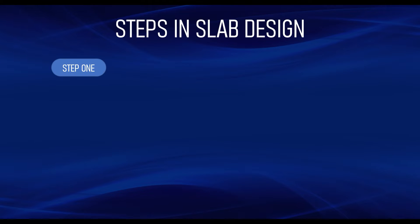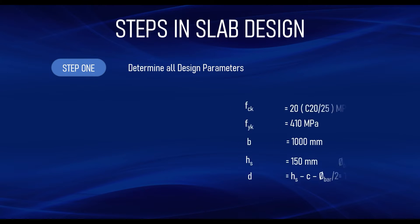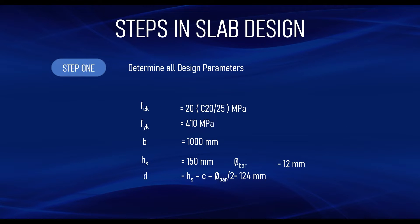Step one: we need to determine the design parameters — all design parameters needed to carry out the design. The first of them is fck, which means the characteristic compressive strength of concrete. To determine this you design with a particular concrete class. According to the Eurocode you can design concrete up to class C90/105, but in this example we are going to be using class C20/25. The 'C' means class, the 20 represents the characteristic cylindrical strength.